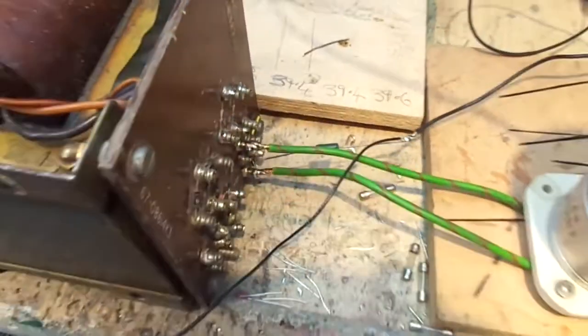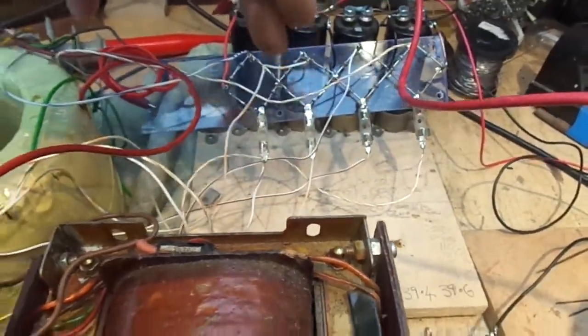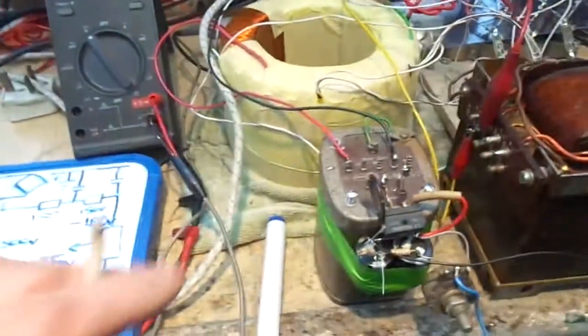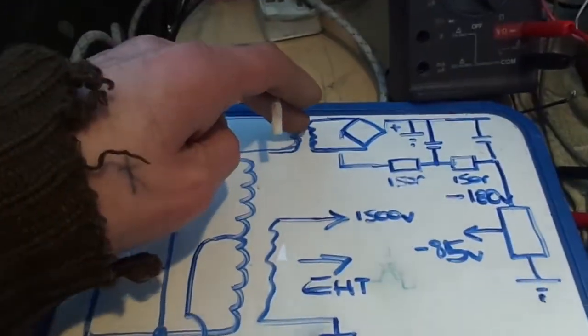And then the middle of that on the center tap of this secondary winding, and then we've got a 1R, 1 ohm resistor. Hope you can see that. That's going to our ground, this is our ground. All the fuses for the HT supply are pulled at the moment, just so I've been able to test it and get it all set.